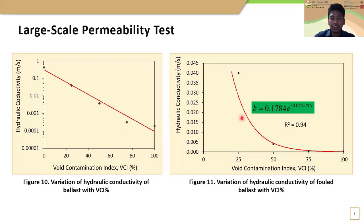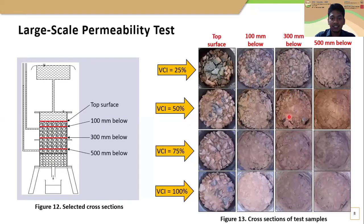Also, this figure shows the exponential variation of hydraulic conductivity of ballast with respect to VCI percentage. The obtained relationship between hydraulic conductivity and VCI percentage can be used to predict the hydraulic conductivity of ballast at different VCI percentages. After each test, while unloading the materials, photographs of cross sections were taken at the top surface, 100 mm, 300 mm, and 500 mm below levels. These photographs clearly show the accumulation of fine particles at the bottom levels of the specimen for each VCI percentage.